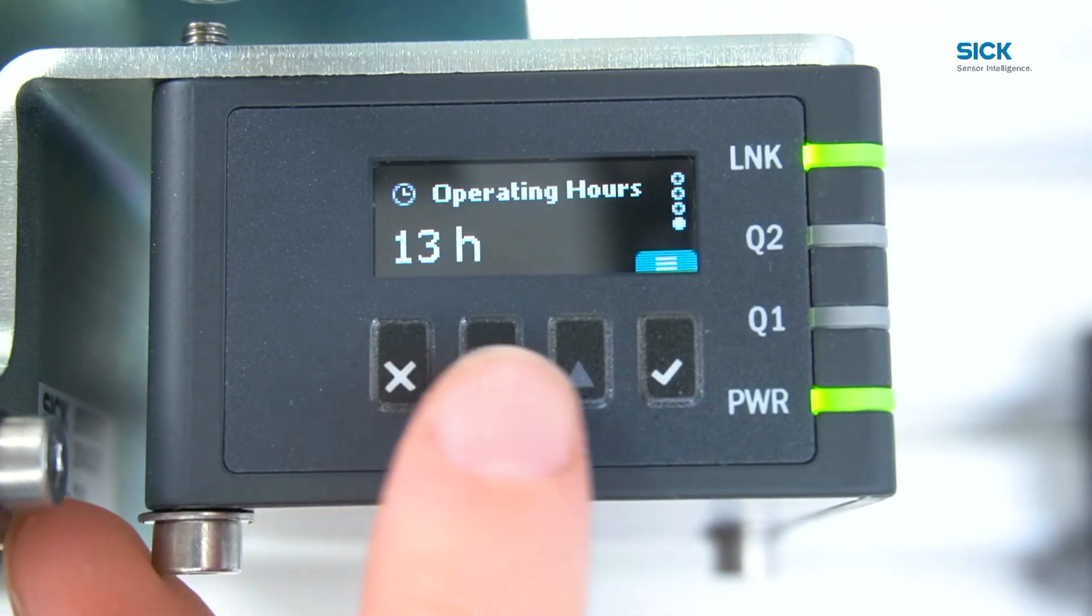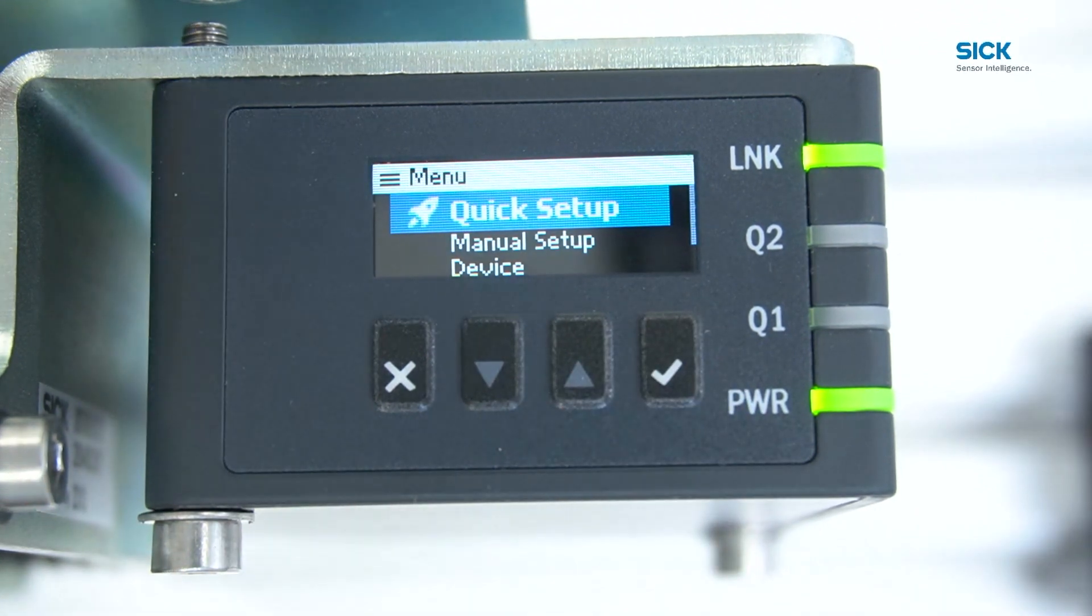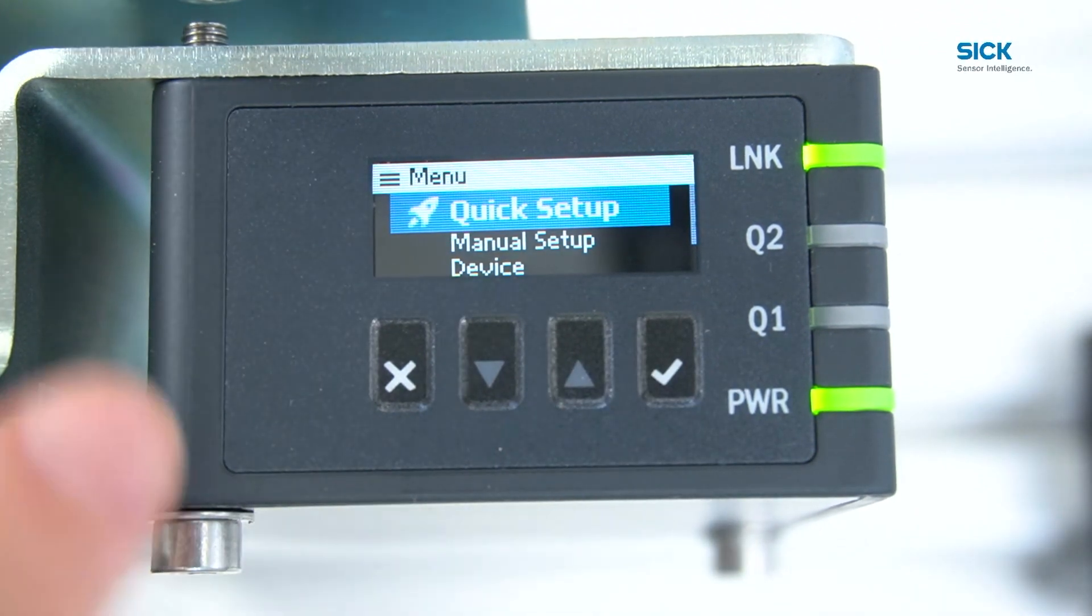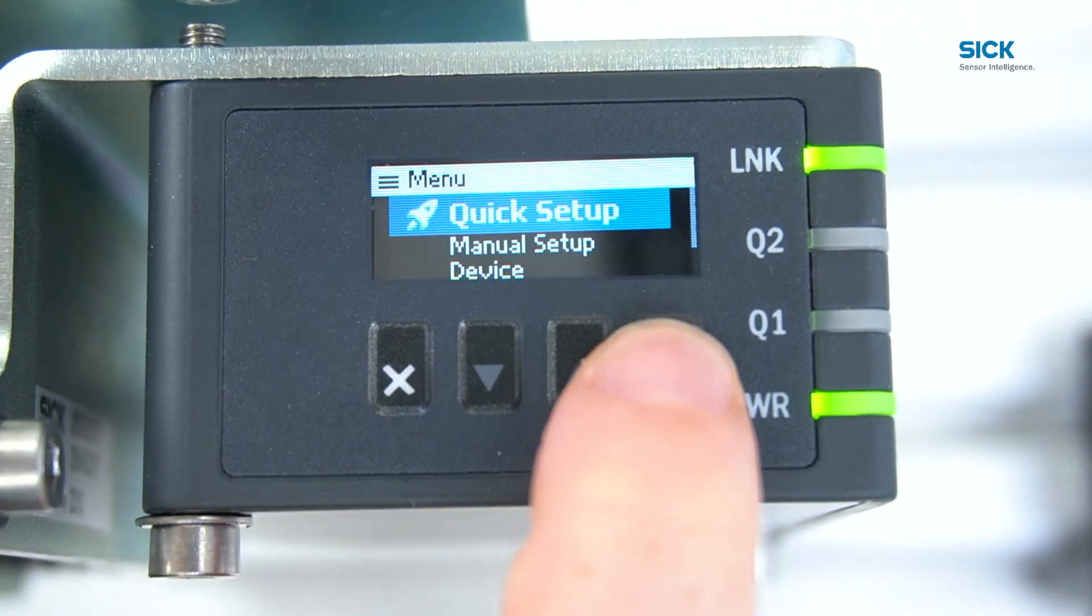For that, we'll navigate to the main menu by pressing the checkmark button. The quick setup option is indicated by the rocket icon. Pressing the checkmark button again will direct us into its menu.